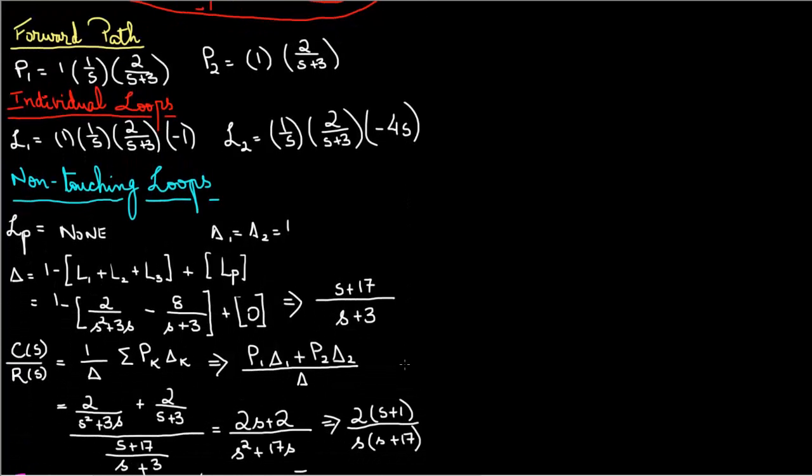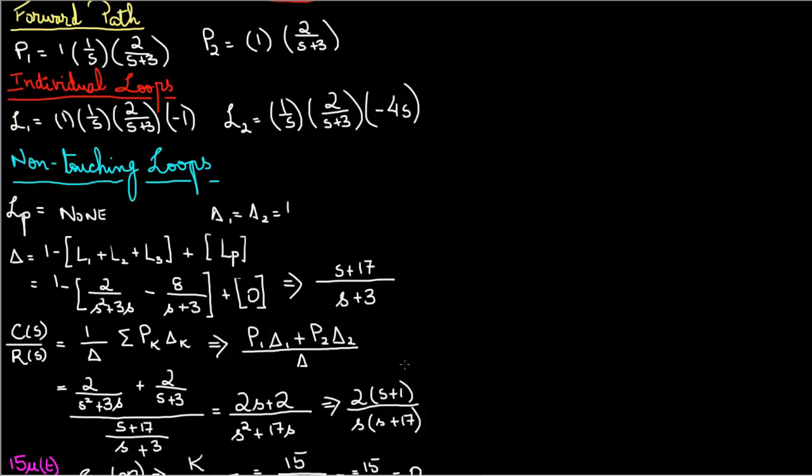And once we have all this information you can compute for delta which is simply 1 minus the sum of the individual loops plus the product of your non-touching loops, but in this case we don't have any so it's just zero. And then you do some algebra for this so after some arithmetic you would end up with in the numerator s plus 17 and in the denominator s plus 3.